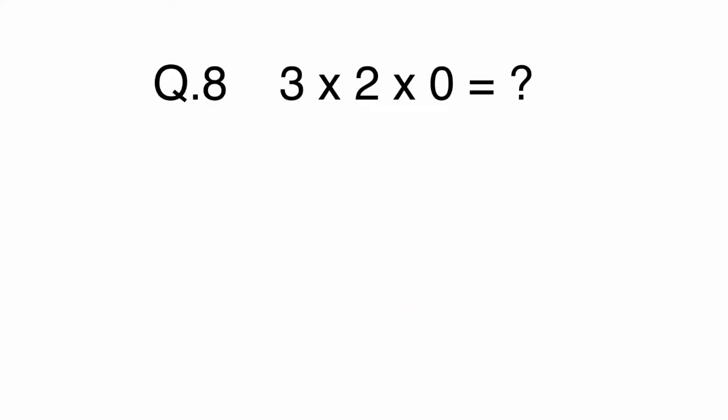Question 8. Three times two times zero equals what? A. Zero, B. Five, C. Six, or D. Seven.